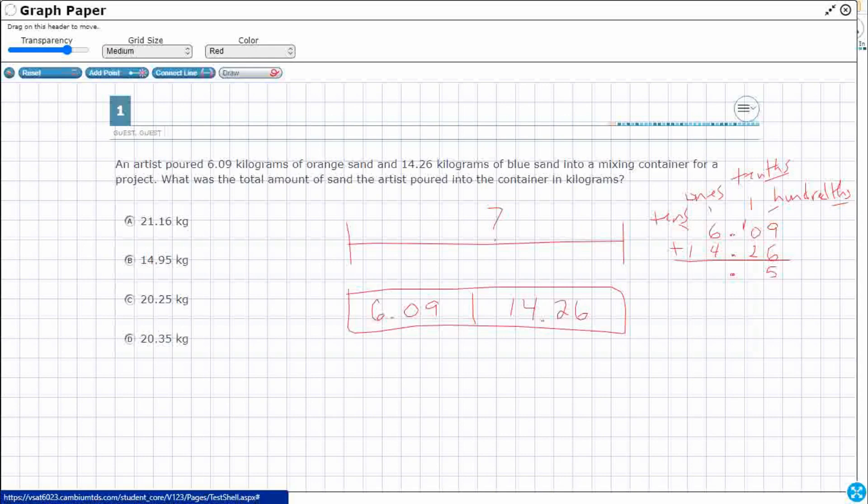One and zero is one. One and two is three. Six and four is ten. One, so look at that, twenty and thirty-five hundredths.